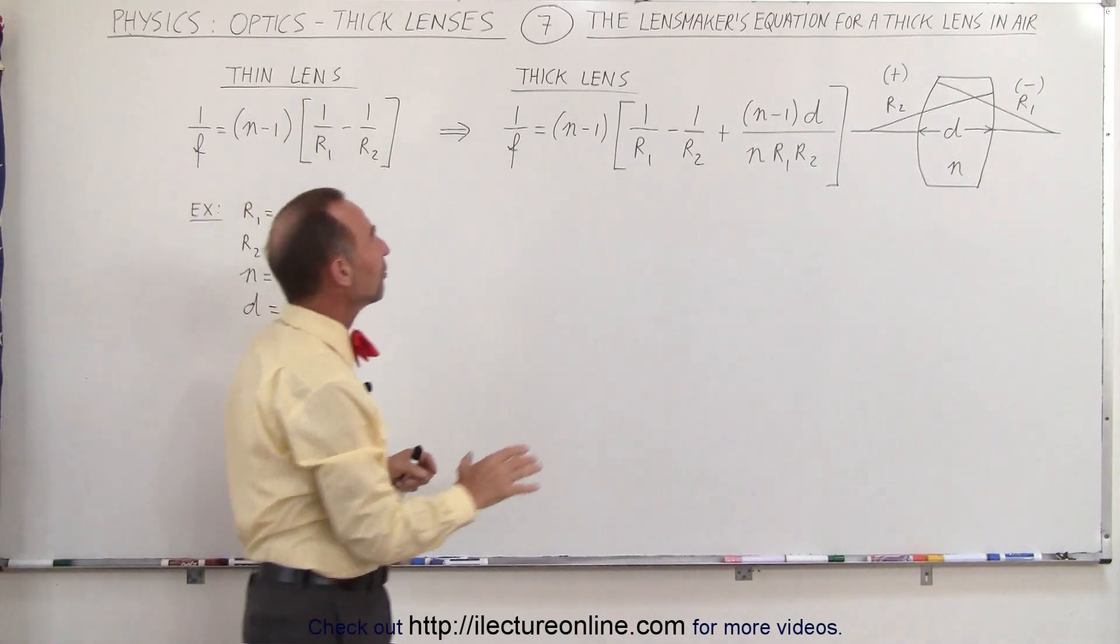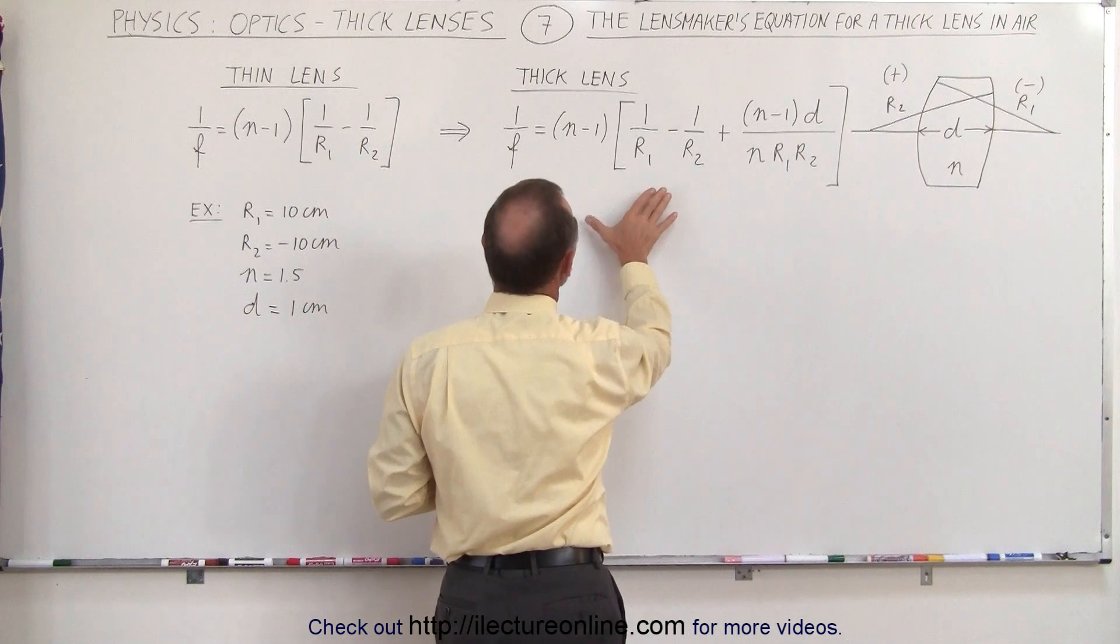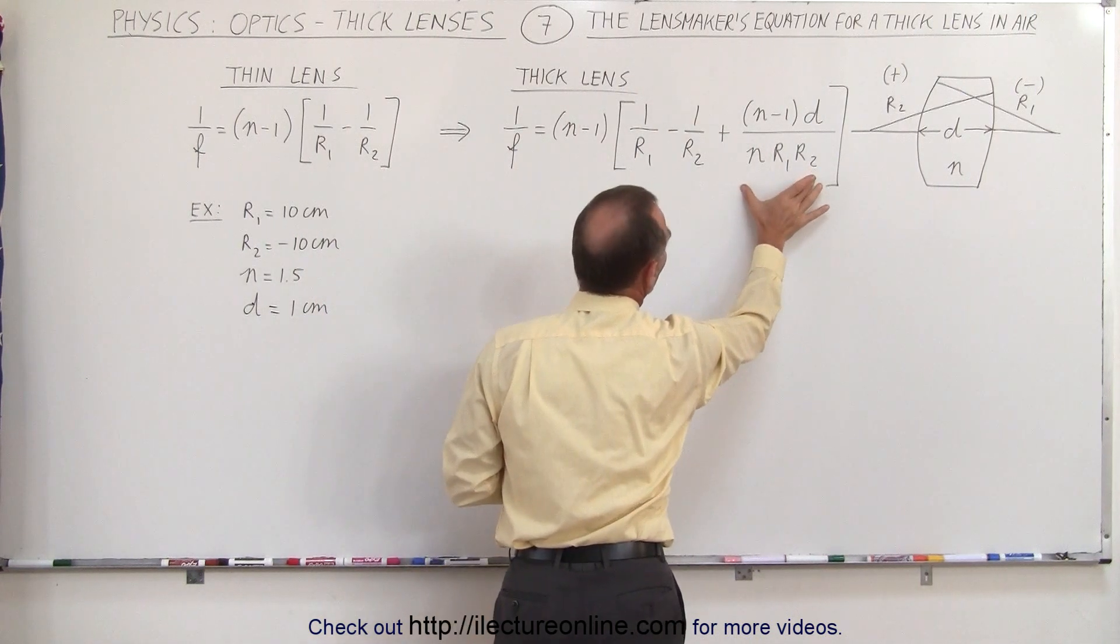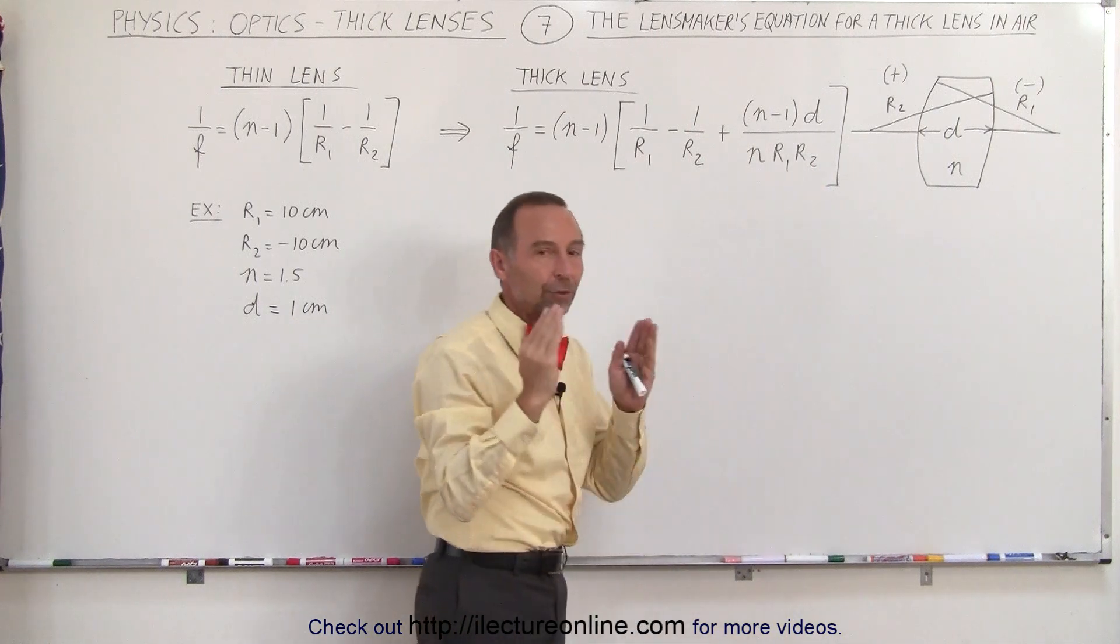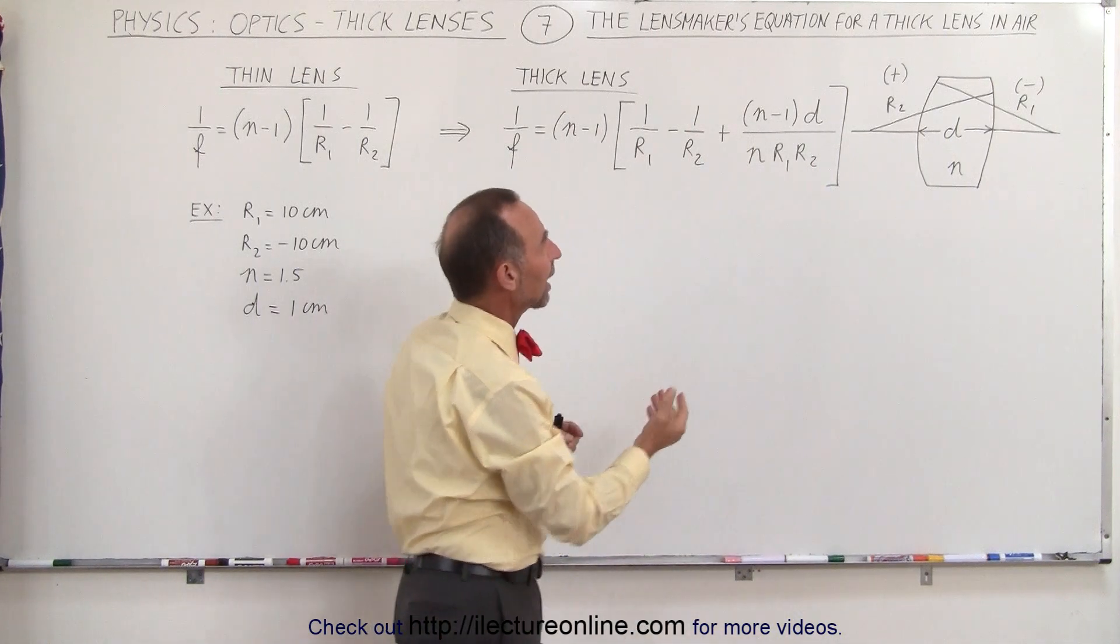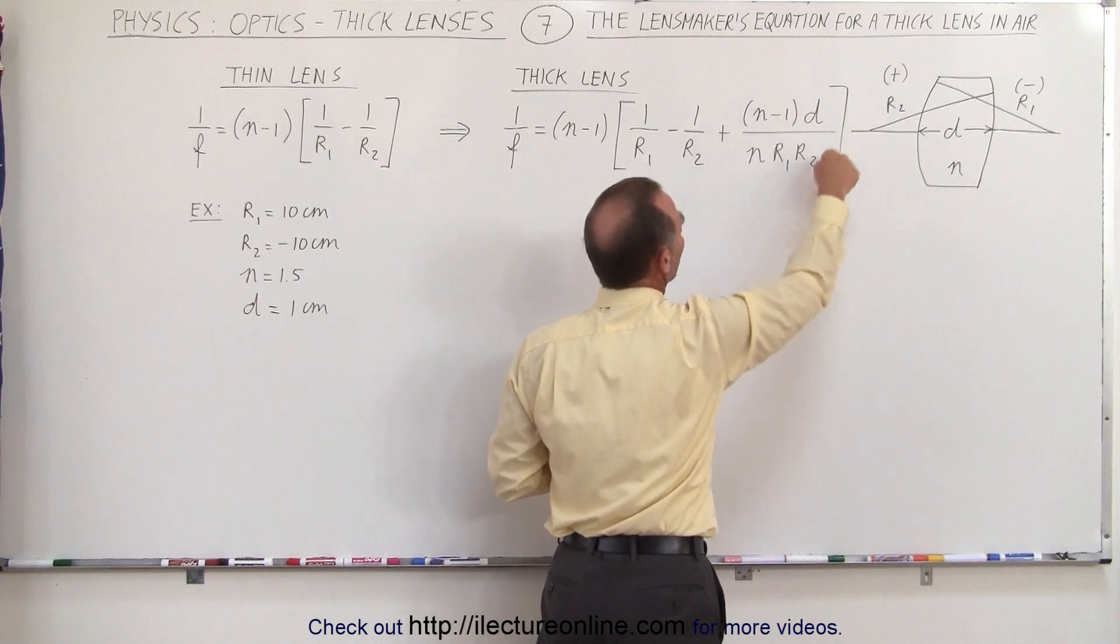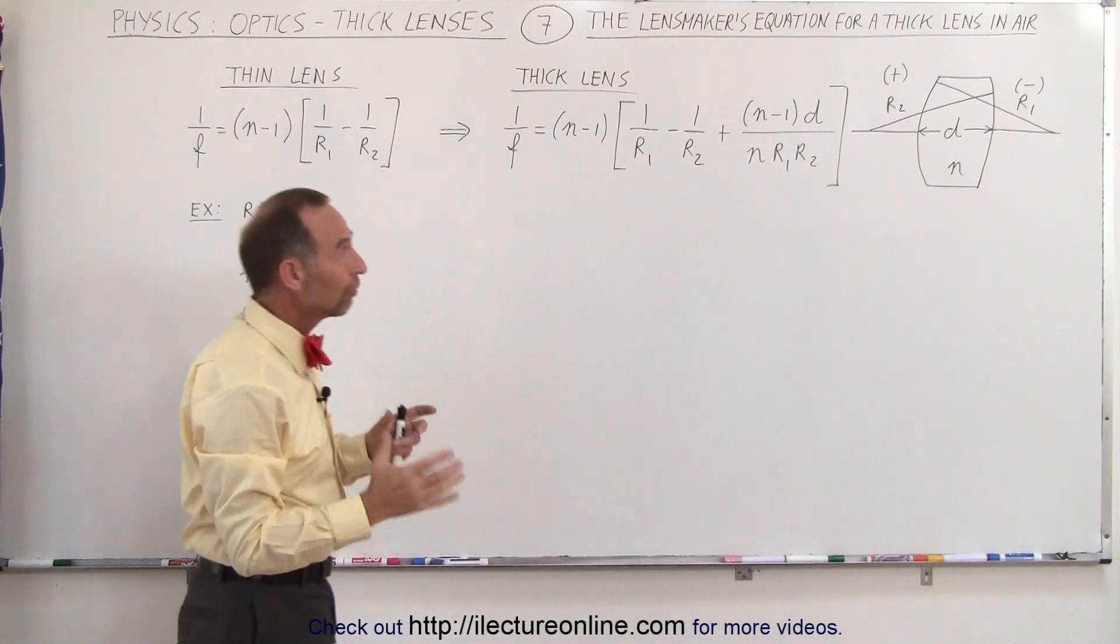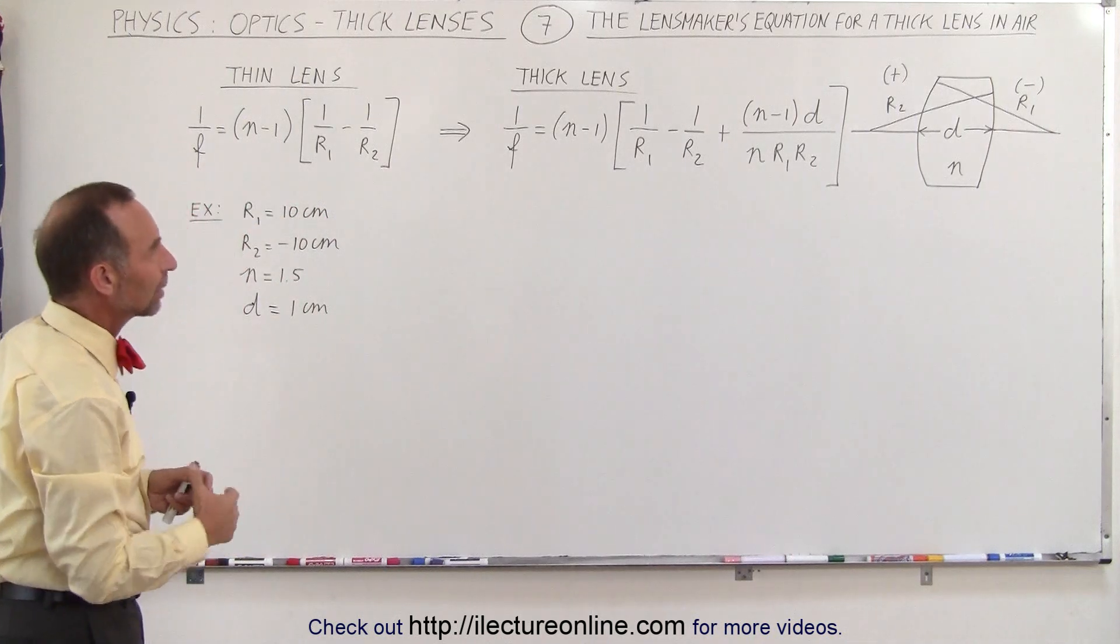Here we have the equation for the lensmakers equation for the thick lens. Now notice everything is the same except this additional term. The fact that the rays travel through the lens we have to account for that, and so therefore the focal length will be somewhat affected, and so these are the parameters we have to use to find that effective focal length of a thick lens.